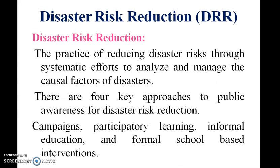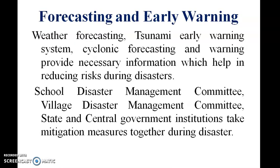Disaster Risk Reduction, or DRR, is the practice of reducing disaster risk through systematic efforts to analyze and manage the causal factors of disaster. There are four key approaches to public awareness for disaster risk. Forecasting and early warning — weather forecasting, tsunami early warning, and cyclone forecasting — provide necessary information which helps in reducing risk during disasters.